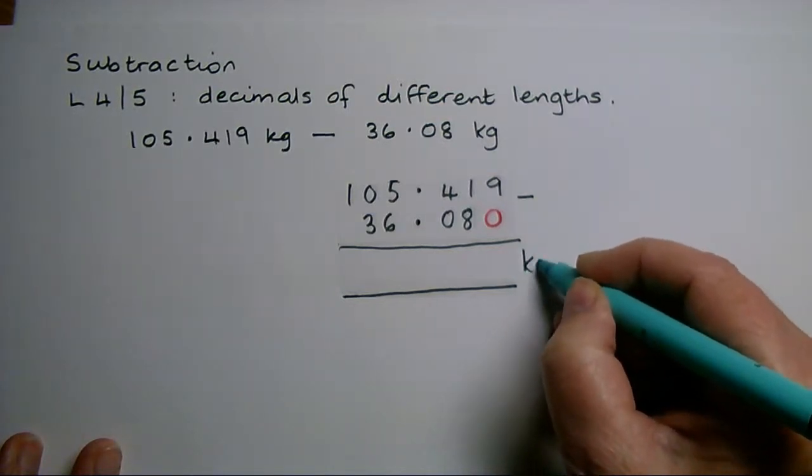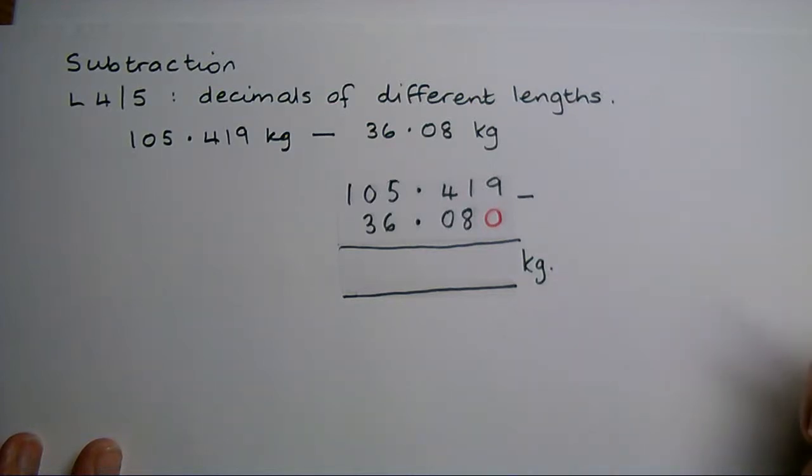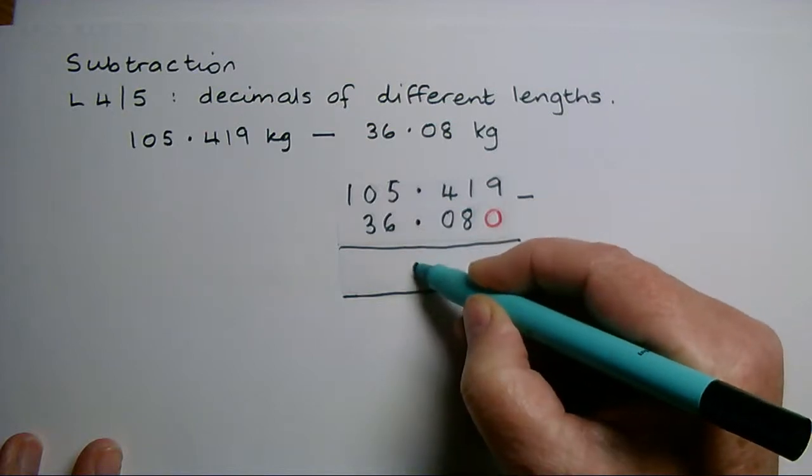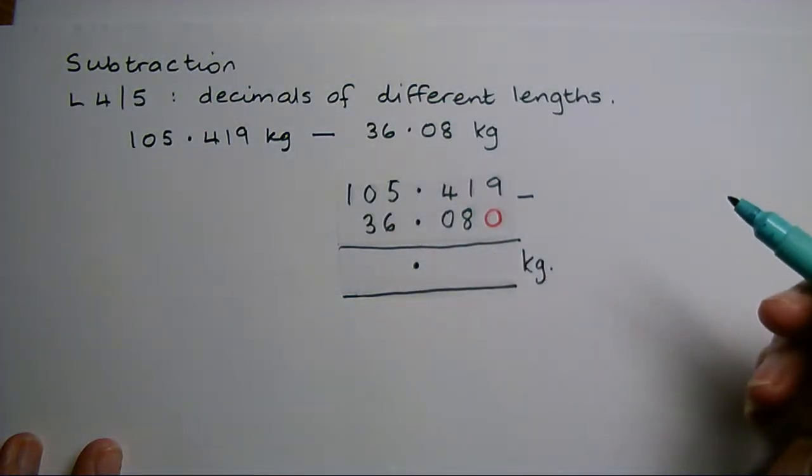Now I can write in my answer. I know that the units for my answer are going to be kilograms, so I'll write that in first. I'm also going to put the decimal point in my answer to make sure that doesn't get lost.